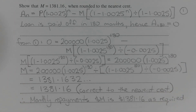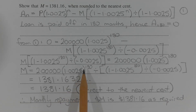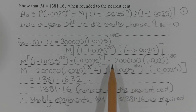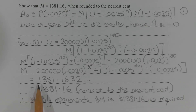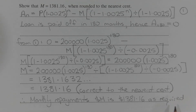Rearranging to make M the subject by dividing both sides by what's in the square brackets, M equals 200,000 times 1.0025 to the power of 180 divided by the quantity 1 minus 1.0025 to the power of 180 divided by negative 0.0025, which evaluates to 1,381.1632, rounding to $1,381.16. Therefore the monthly repayment M dollars is $1,381.16 as required.